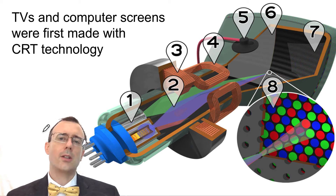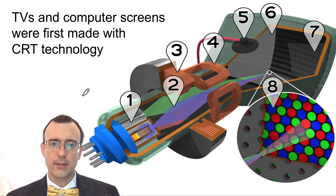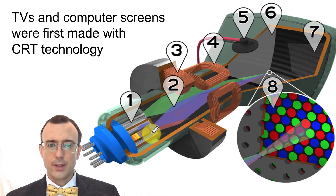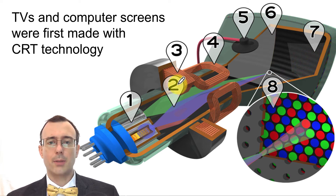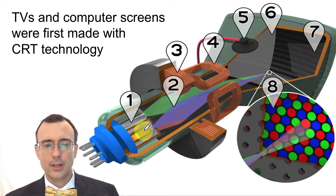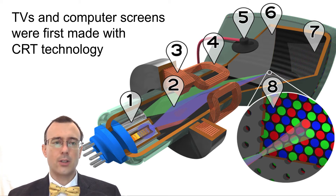It's interesting that all this investigation of the atom led to advances in technology. For example, the very first televisions and computer screens were made with cathode ray tube technology. In a color television you have three different cathode ray tubes shooting out electrons, which could be moved using electromagnets to any point on the screen. By cycling through the entire screen and varying the amounts of red, blue, and green, you could get any color and any kind of effect you wanted.